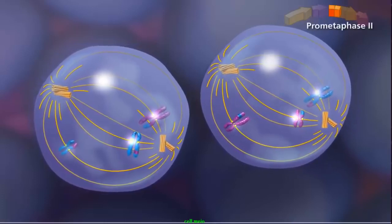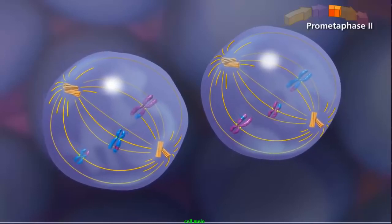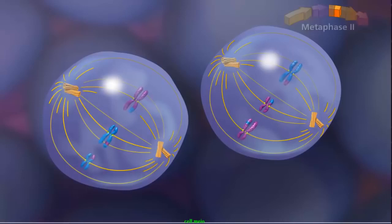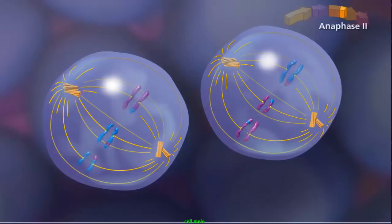In prometaphase II, the sister chromatids attach to the spindle by kinetochore microtubules, with sister chromatids attached to opposite poles. The spindle aligns the sister chromatids along the metaphase plate during metaphase II.